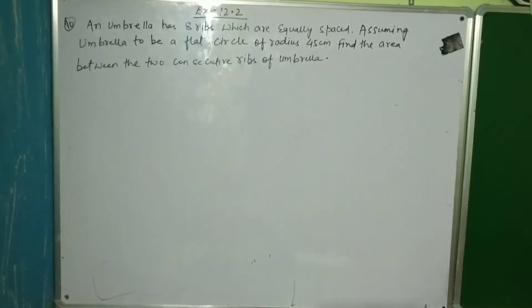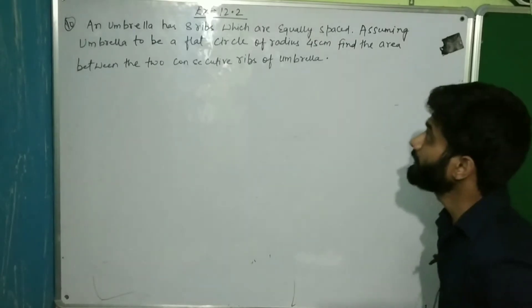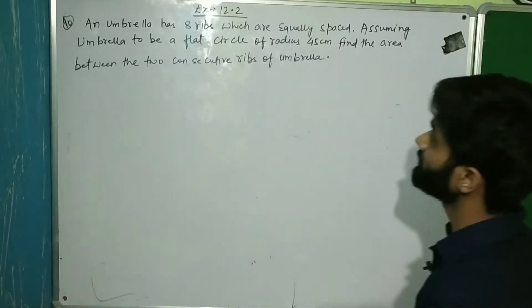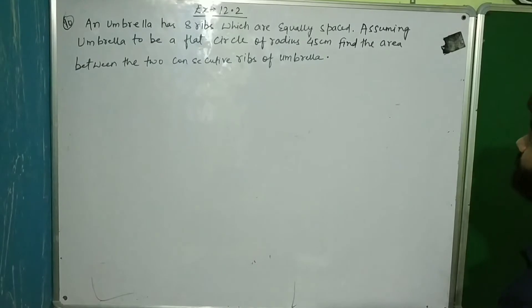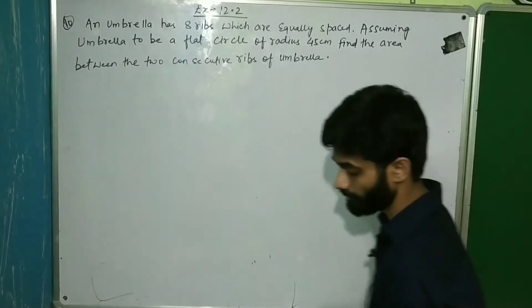Let's look at the question. In question number 10, an umbrella has 8 ribs which are equally spaced, assuming umbrella to be a flat circle of radius 45 cm, find the area between the two consecutive ribs of the umbrella.